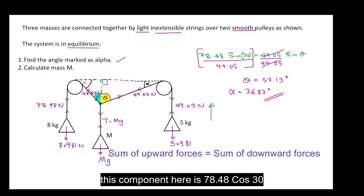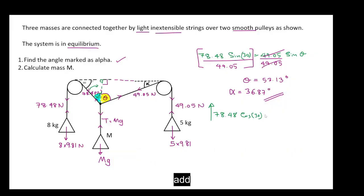So this component here is 78.48 cos 30 add 49.05 cos theta. Now I know theta is 53.13